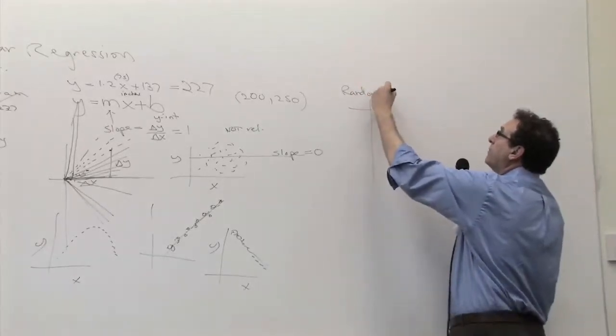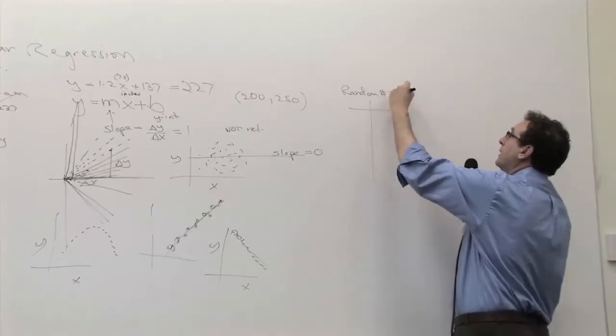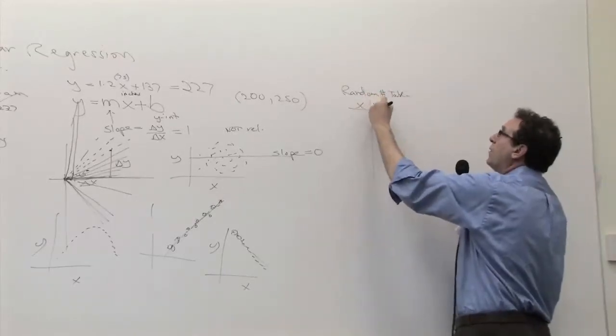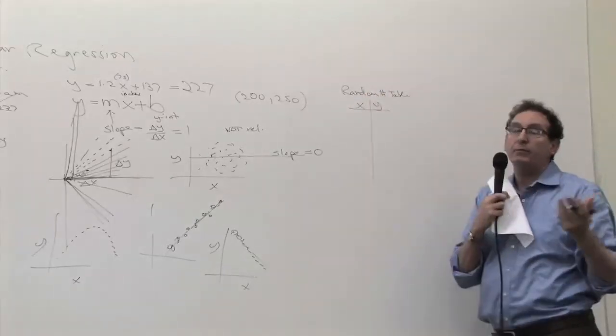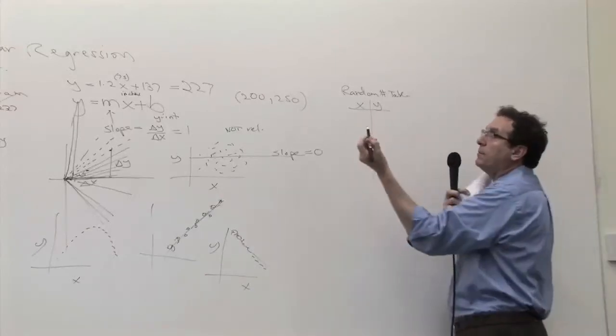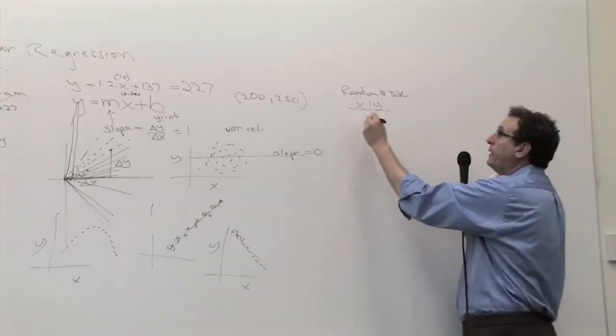You pick an X and a Y. Now, which is X and which is Y? It's random, so it doesn't make a difference. Don't copy my numbers, of course. I mean, you've got to pick truly random because when I make them up, they're not random.